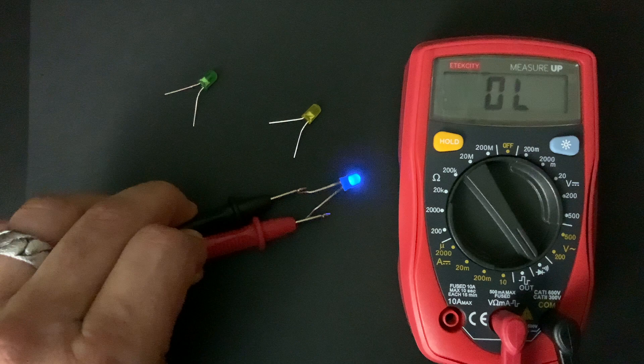But some LEDs such as blue, white, purple, they have higher forward voltages. Usually three volts or more. And most meters aren't really designed to measure those in diode test mode.